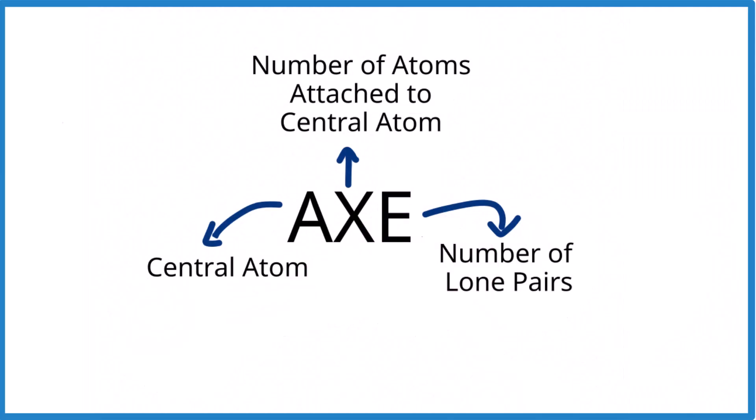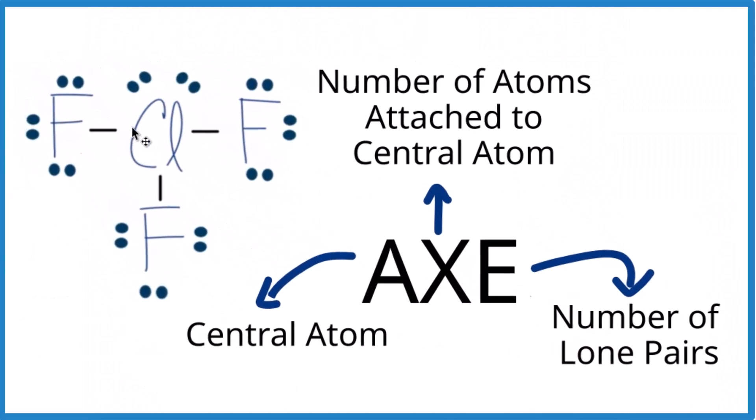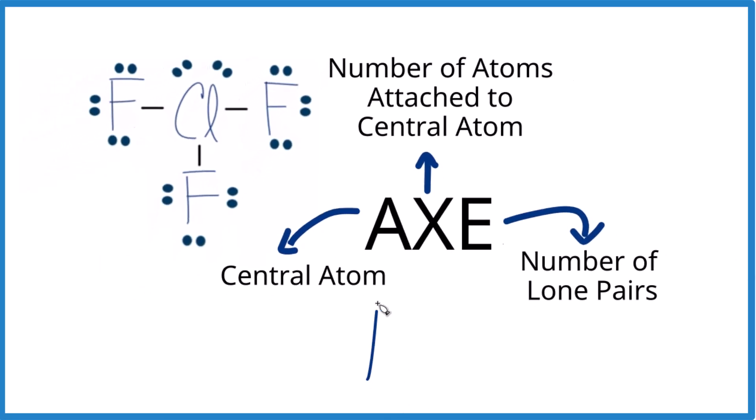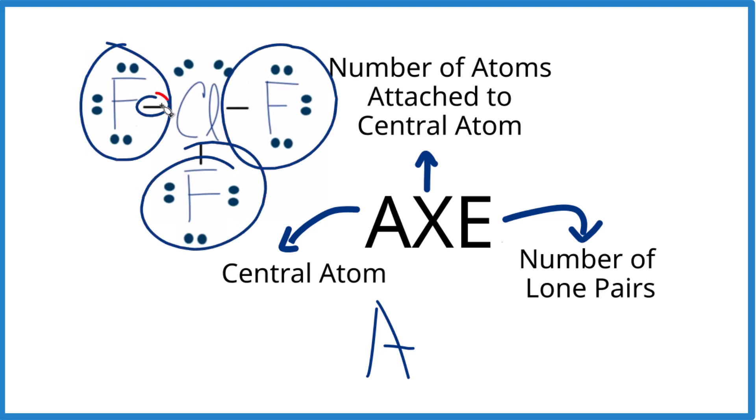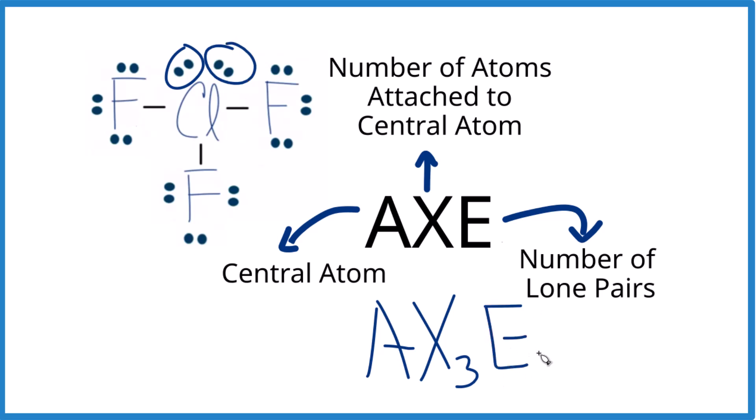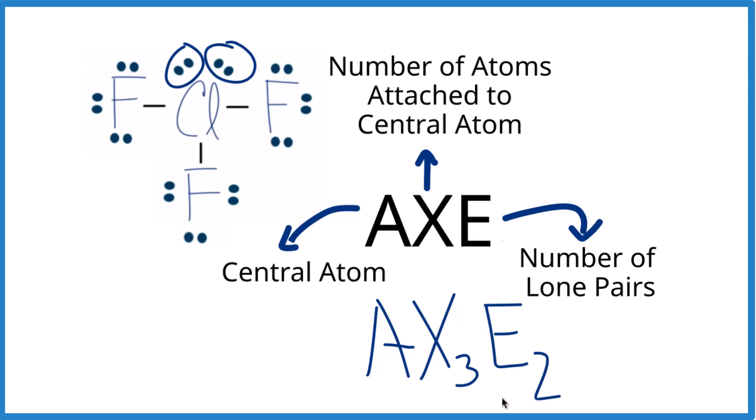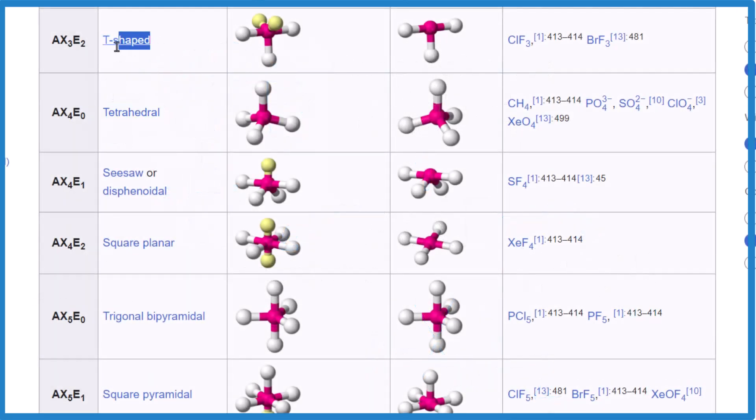Let's do one last one, a little more complicated. Pause and find the AXE notation for ClF3, and then type in Wikipedia AXE notation in Google, and see if you can figure out what its molecular geometry is. A is the chlorine. X is the number of atoms: one, two, three. This represents a pair of electrons, so X3. E, we have one, two lone pairs, so E2. AX3E2. We look it up, actually it's right here, T-shaped. This is the T-shaped molecular geometry.